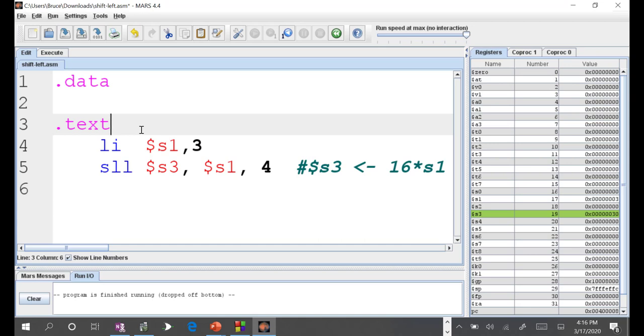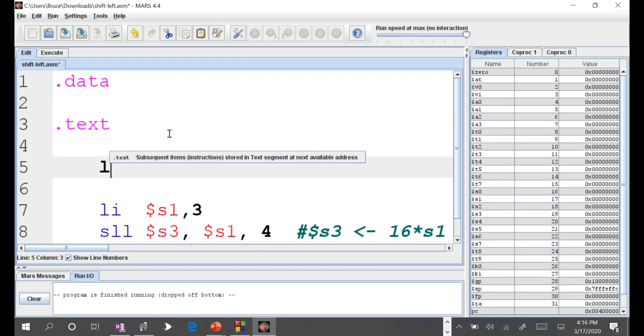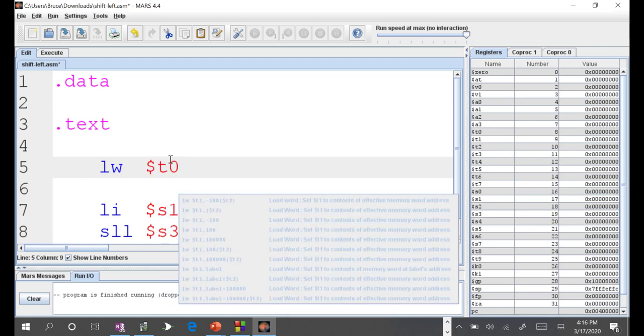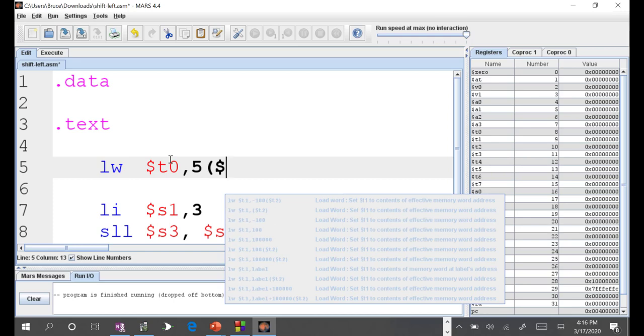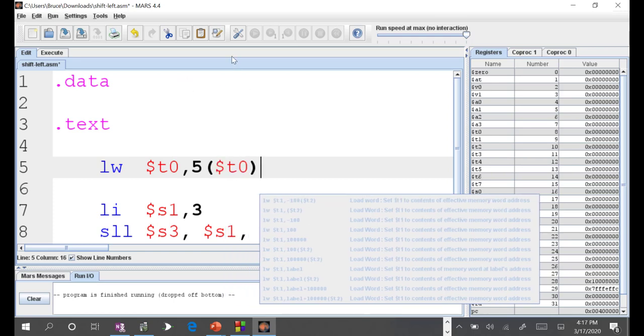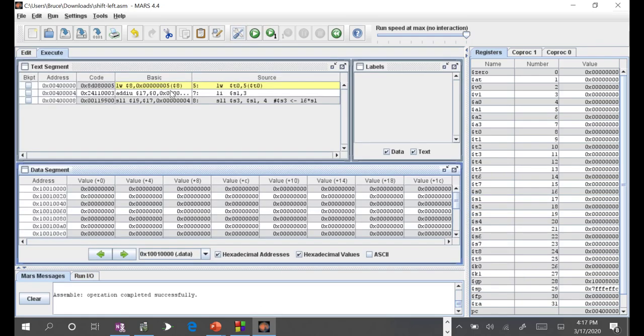If you recall, that if you want to do something like this, where you load up, we have load word, the instruction T0, 5, 5, $T0, and if we assemble that instruction, that load word gets converted into a basic representation where there's an immediate value. That 5 gets encoded into a number, and then that 5 becomes a 16-bit 5.